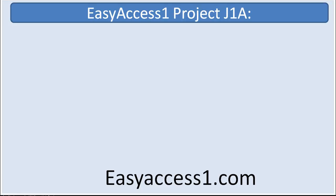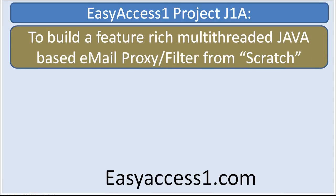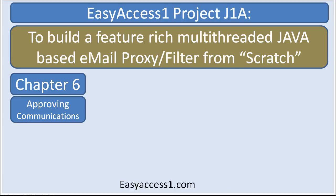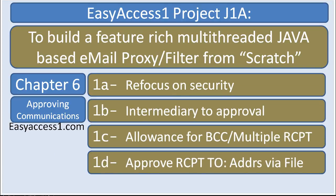Welcome to the Easy Access One project, J1A. This project is to build a feature-rich, multi-threaded Java-based email proxy filter from scratch. Welcome to Chapter Six: Approving Communications. We're changing focus — instead of focusing on functionality, we're shifting towards security features. In this case, the filter feature is a security function. We need to move from being an intermediary to being an approval process, approving the information as it comes through and heads to the email server.